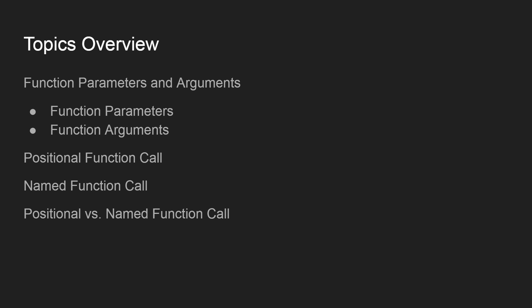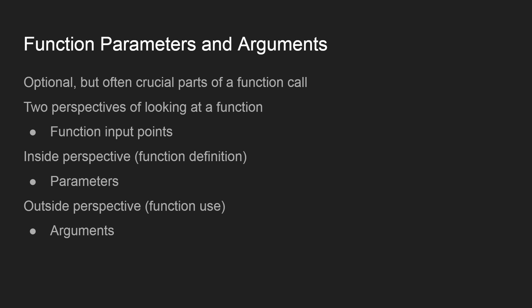Function parameters and arguments are optional but often crucial parts of a function call. If our function needs to get some data from the outside, it will do so using parameters and arguments. There are two perspectives: from inside the function definition, input points are called parameters; from outside, when feeding the function via a call, we use arguments. Every argument passed will end up in a specific parameter.